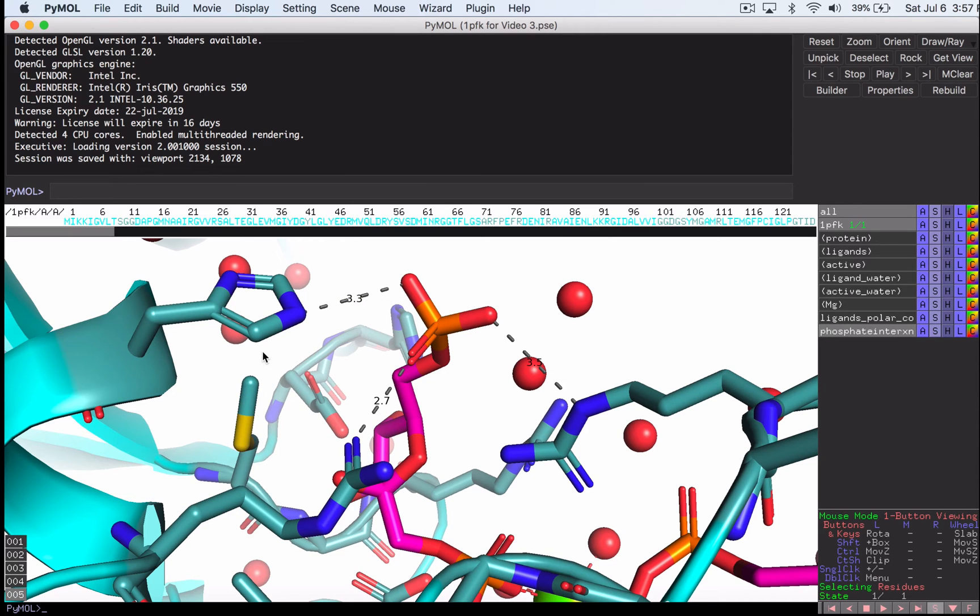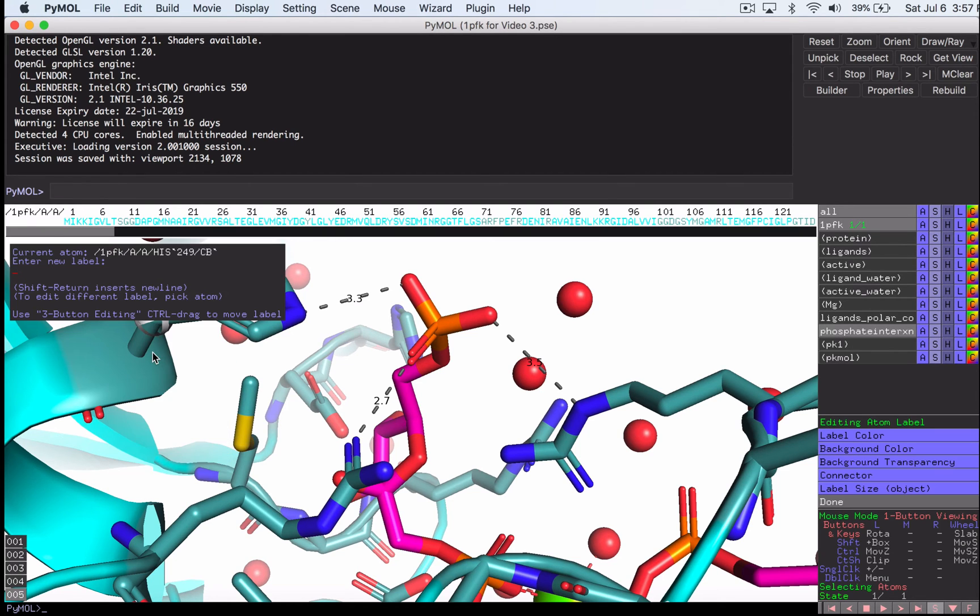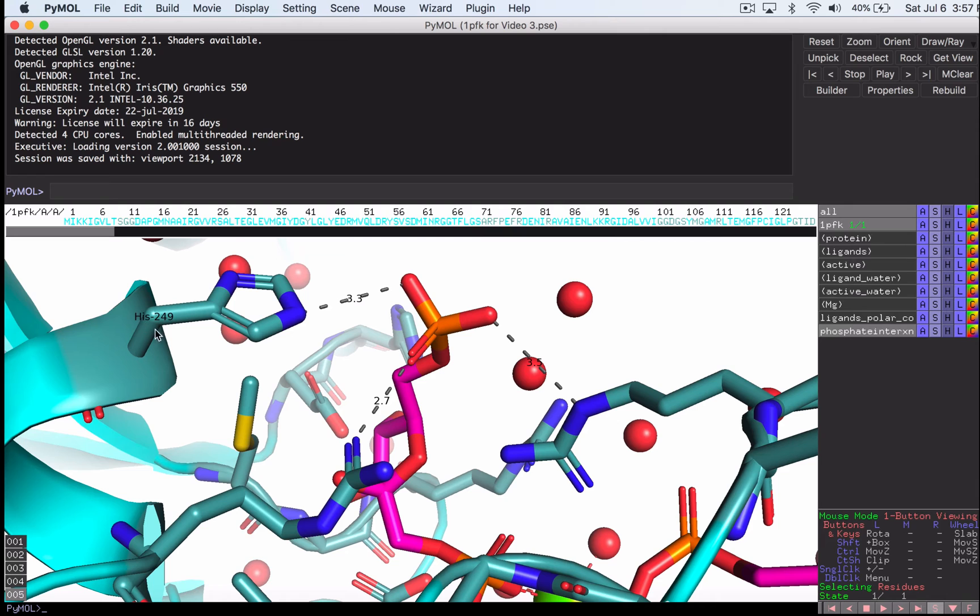Now what most people don't know is that you can actually right click here, and then just say Edit Label. This is what it's going to put as the label, but we can label this residue as anything we want. So say I like to use a capital H and a lowercase is. Maybe my PI wants a dash in there. I can do all of that. Let's repeat this process for the remaining residues.